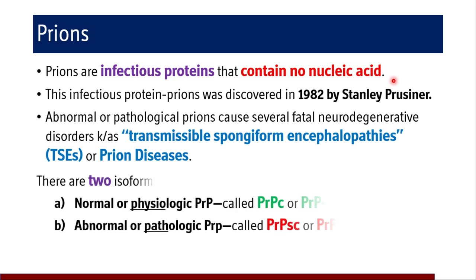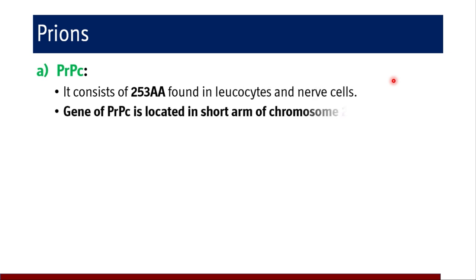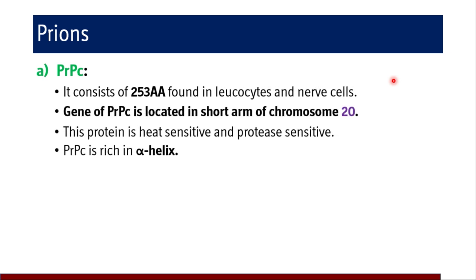There are two isoforms. The normal or physiologic form is PrPC, also called PrP-sen. The second isoform is abnormal or pathologic PrP, called PrPSc or PrP-res. PrPC consists of 253 amino acids, found in leukocytes and nerve cells. The gene of PrPC is located on the short arm of chromosome 20. The protein is heat sensitive and protease sensitive, and it is rich in alpha-helix.